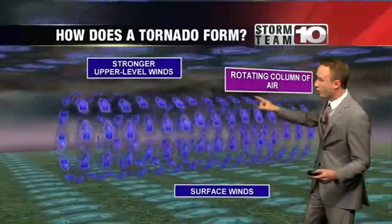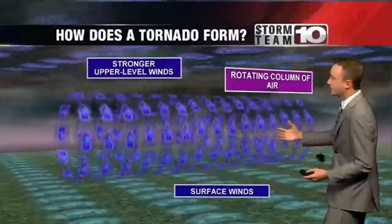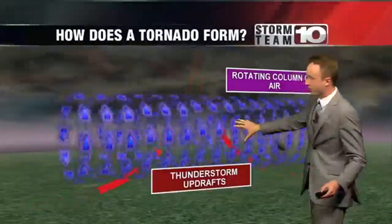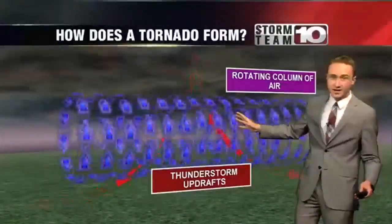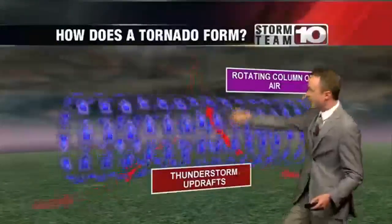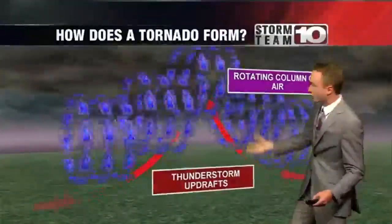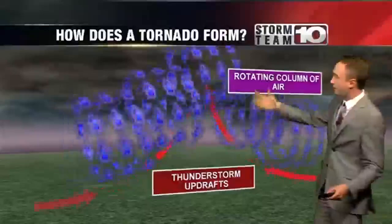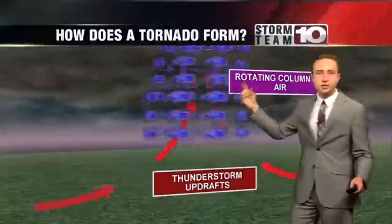What this does is create a rotating column of air. This can happen on a windy day, but when you add a thunderstorm to the equation — when a thunderstorm moves into this area — thunderstorms like to move air up. And when they do that, it drives this rotating column of air up into the sky.